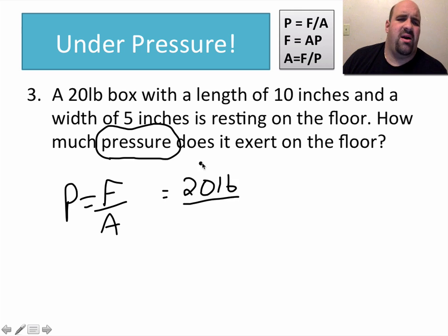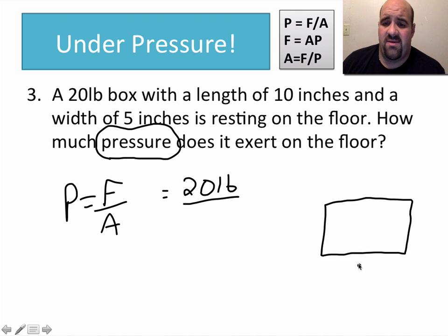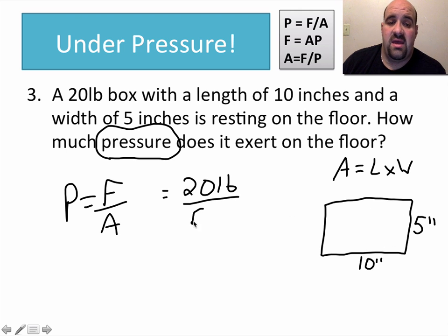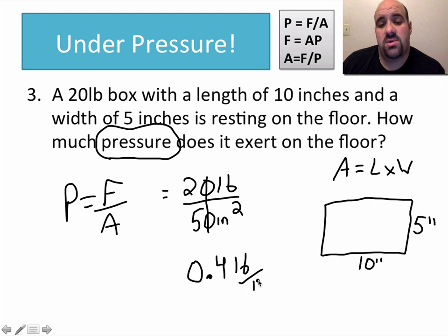And what's the area of the box? Well, we don't know the area. What they tell us, the box has a length of 10 inches and a width of 5 inches. And if you remember, area of a rectangle equals length times width. So the area of this box is going to be 10 times 5, or 50 inches squared.